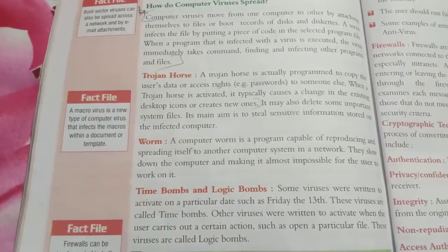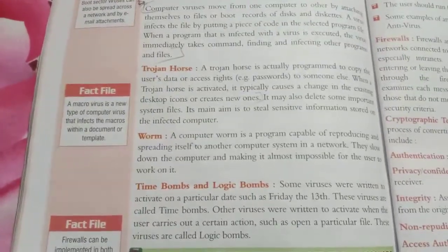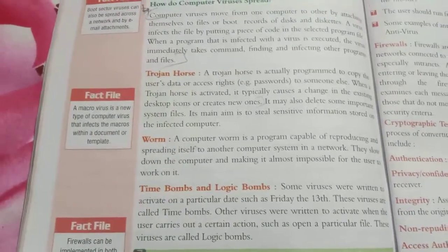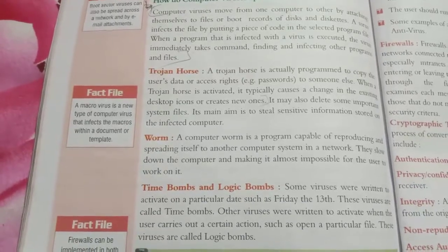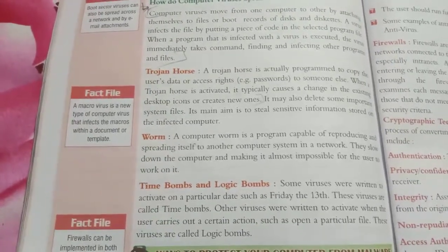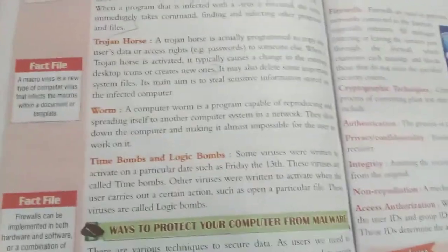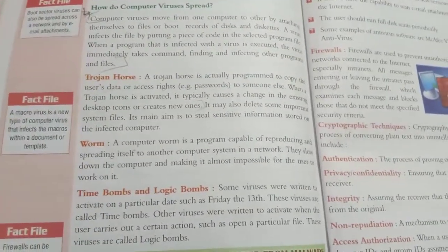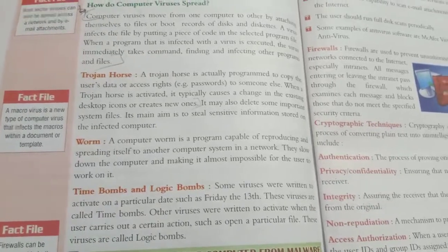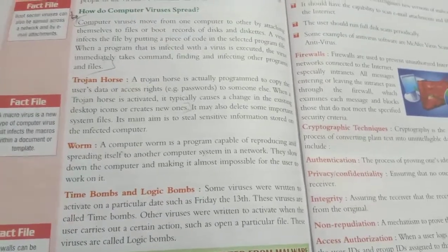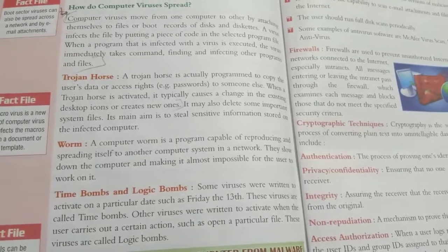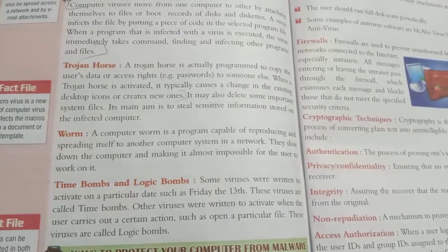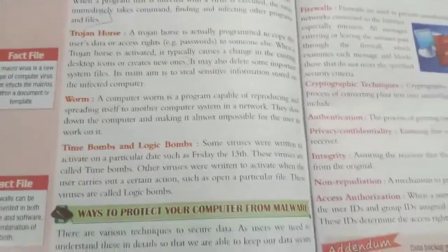The next type is the Worm. A computer worm is a program capable of reproducing and spreading itself to another computer system in a network. Worms slow down the computer, making it almost impossible for the user to work on it.